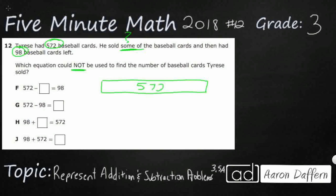So we're going to draw a strip diagram, or you might know it as a part-part-whole. So we've got 572, and then these are the two different parts of it. We don't know how many he sold—question mark. I'm thinking it's a pretty large part because there's only 98 left.